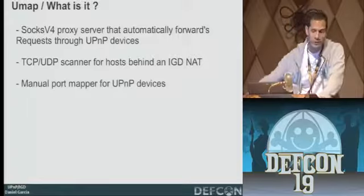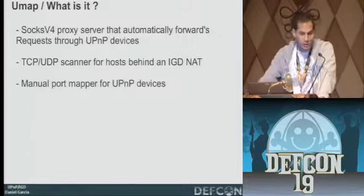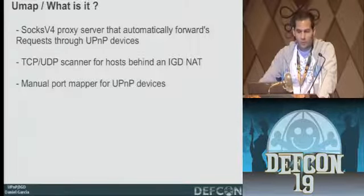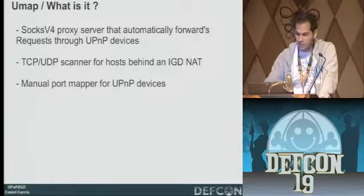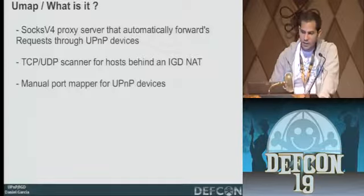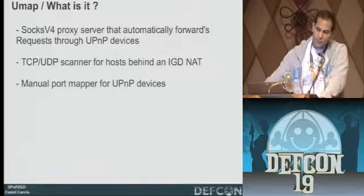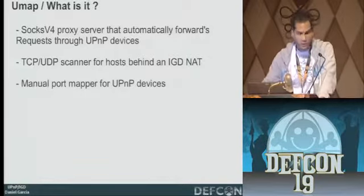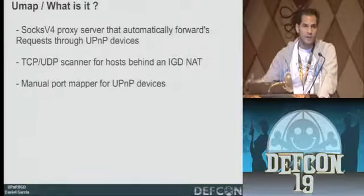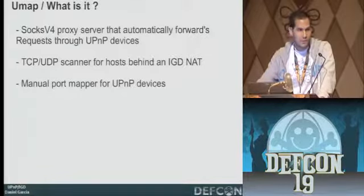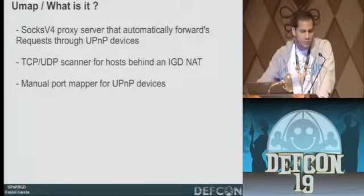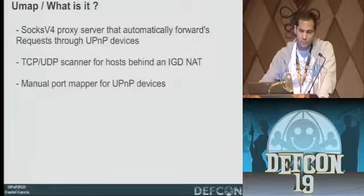UMAP — what is it? First of all, it's a SOCKS proxy server that forwards or pipes requests through UPnP devices. It's also a TCP/UDP scanner for hosts behind the IGD NAT — basically we can scan services of hosts inside the NAT from outside. And it's also a manual port mapper for UPnP devices.